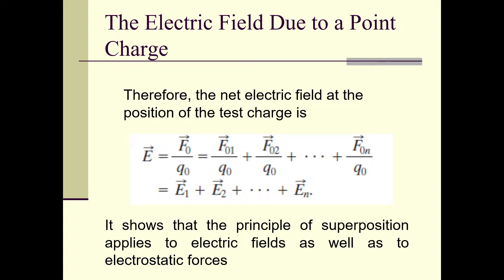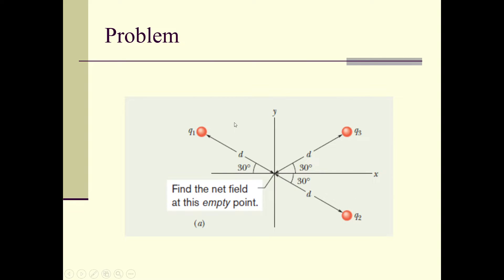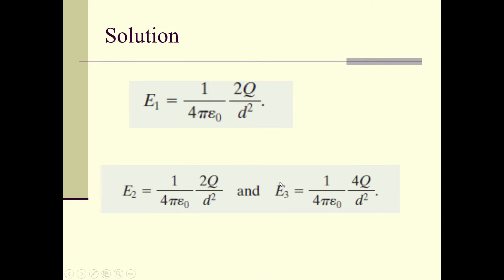Now there is an example in which we have three charged particles: q1 = 2q, q2 = −2q, and q3 = −4q. Their distance from the origin is d, and we need to find out the net electric field at the origin. Graphically, these are three particles — q1 is positive (2q), q2 is negative, and q3 is also shown. The net electric field means the combined effect of q1, q2, and q3 at the origin.